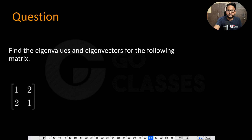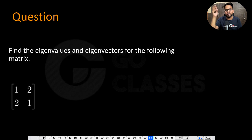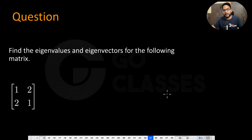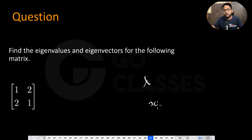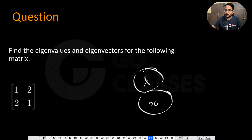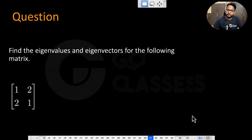So first we solve det(A - λI) = 0 to get the eigenvalues λ, and then we substitute each λ back into (A - λI)x = 0, which is a homogeneous system of equations, and solve for the eigenvector x. Let's do some examples. Try solving the first question for both λ and x before the next video.